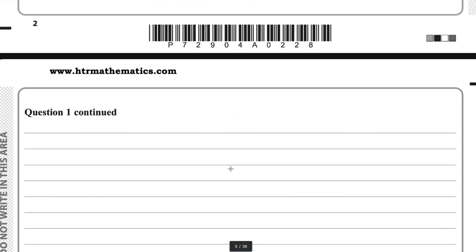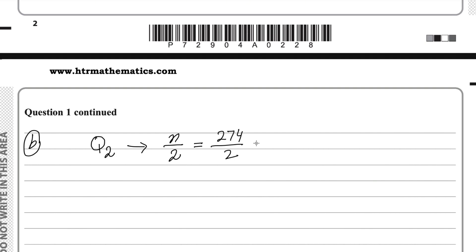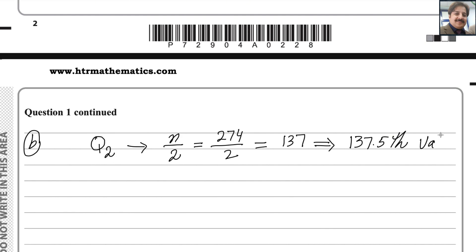Now here is how to use interpolation to find the median. The median is represented by Q2. To find Q2, first find the N/2 value: 274 divided by 2 gives 137. There is a rule — if you get a whole number, add 0.5 to that number. So we use 137.5. The 137.5th value will be the median.